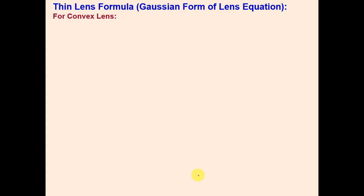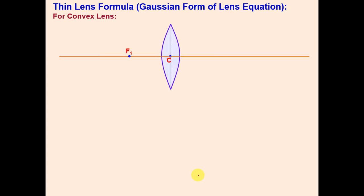For the thin lens formula (Gaussian form of the lens equation): for a convex lens, f1 and f2 are the first and second principal foci. The centers of curvature are at double the focal length from the lens.